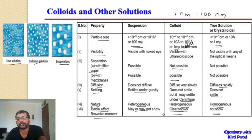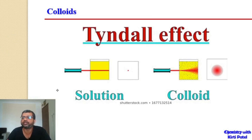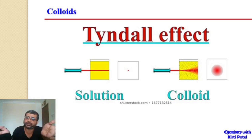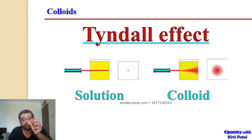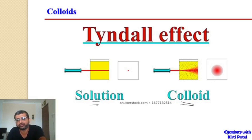The Tyndall effect and Brownian motion are shown by colloidal particles but not by true solutions, though they may sometimes be shown by suspended solutions depending on particle size. In the Tyndall effect, when a ray of light passes through a true solution only a single dot appears at the end, but through a colloidal solution the particles spread the light out — it disperses over an area rather than appearing as a single dot in a line.